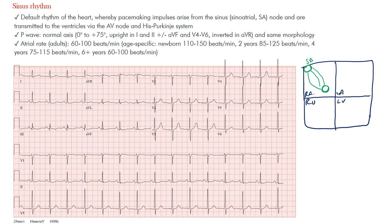This is our SA or sinus node, our AV node, and our His bundle here. From the His bundle, one branch innervates the right ventricle — the right bundle branch. Then you have the left bundle branch, which subdivides into an anterior and posterior fascicle: left anterior fascicle and left posterior fascicle. From the SA node, you also have the Bachman bundle that depolarizes and innervates the left atrium.